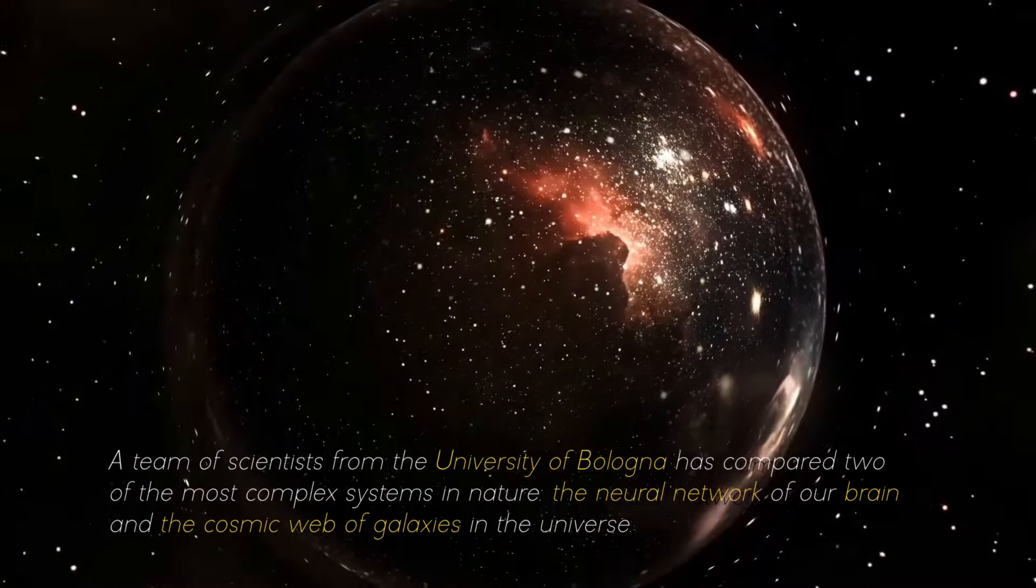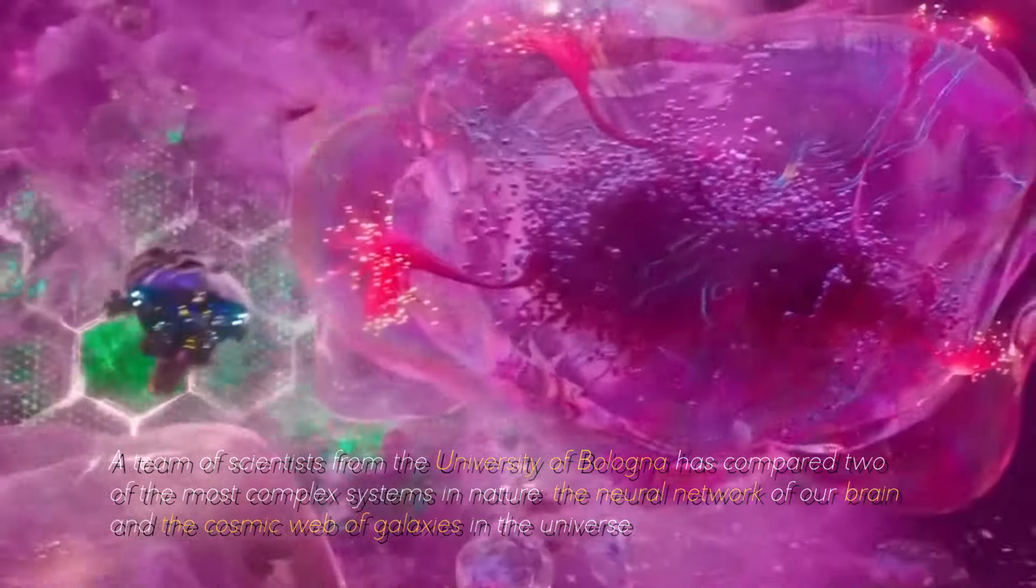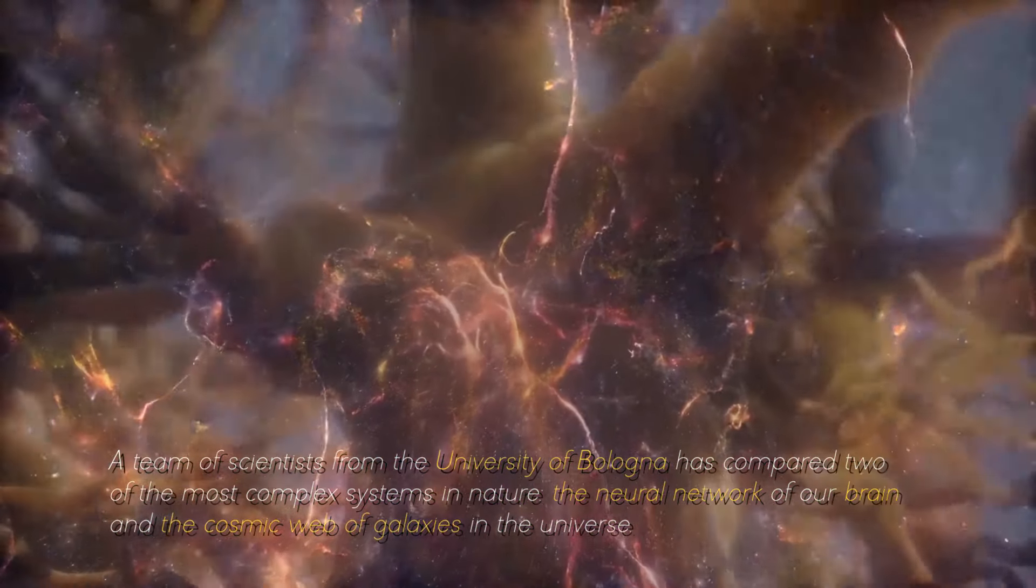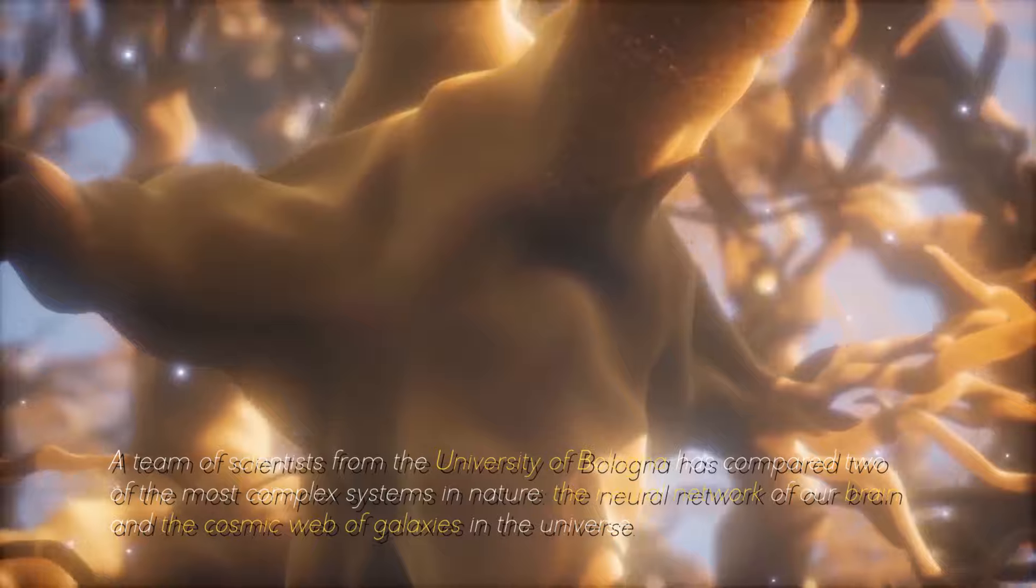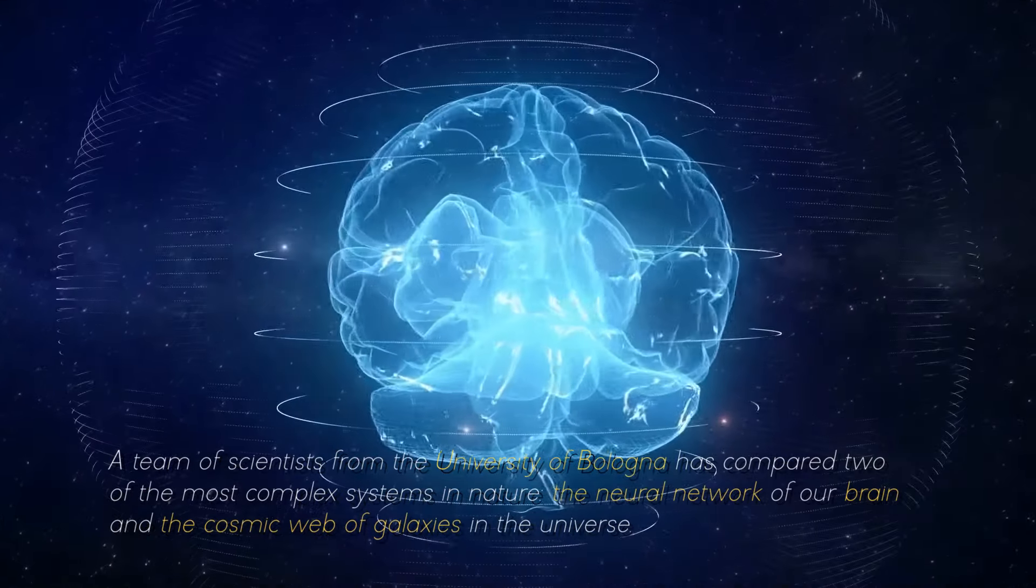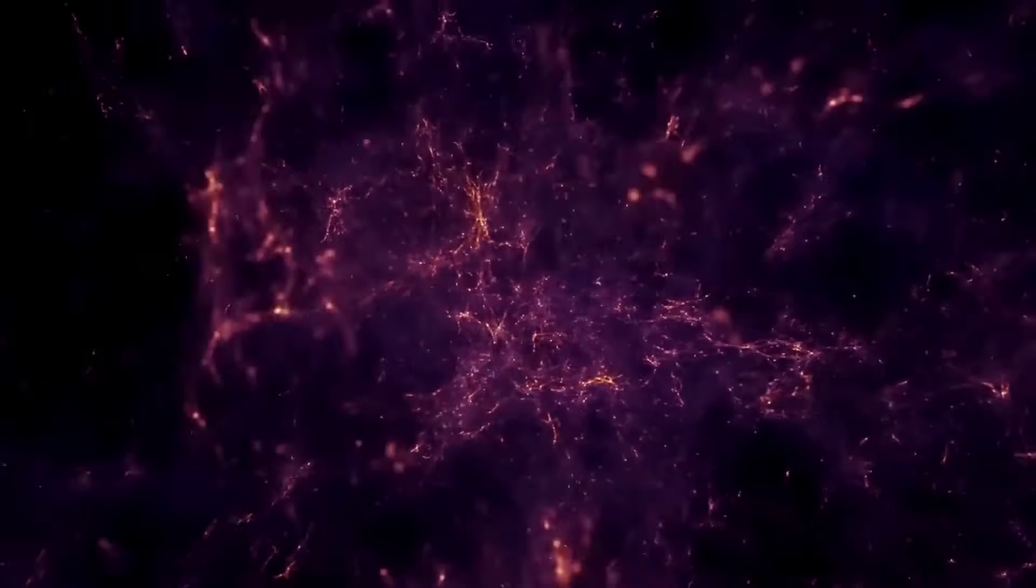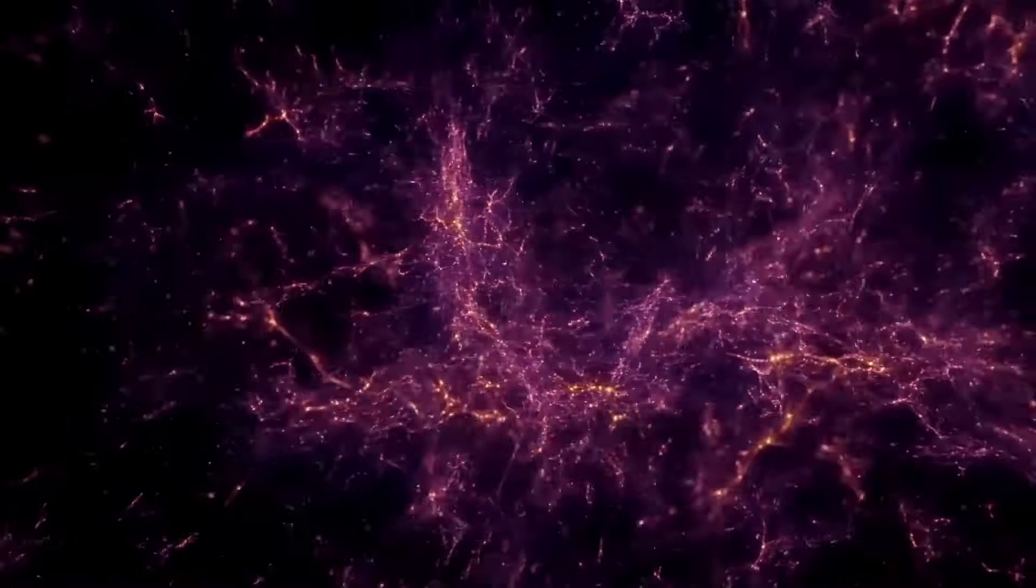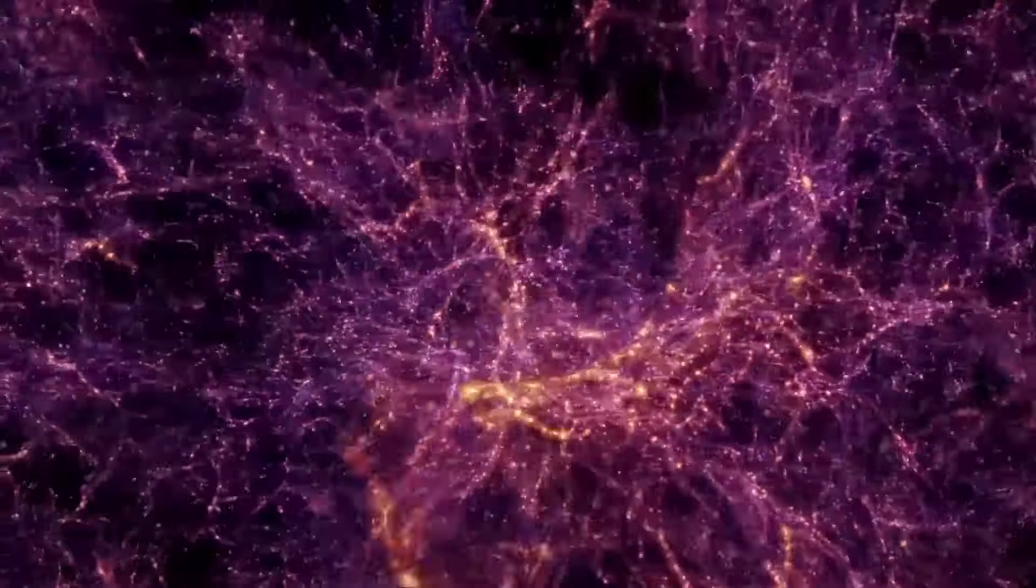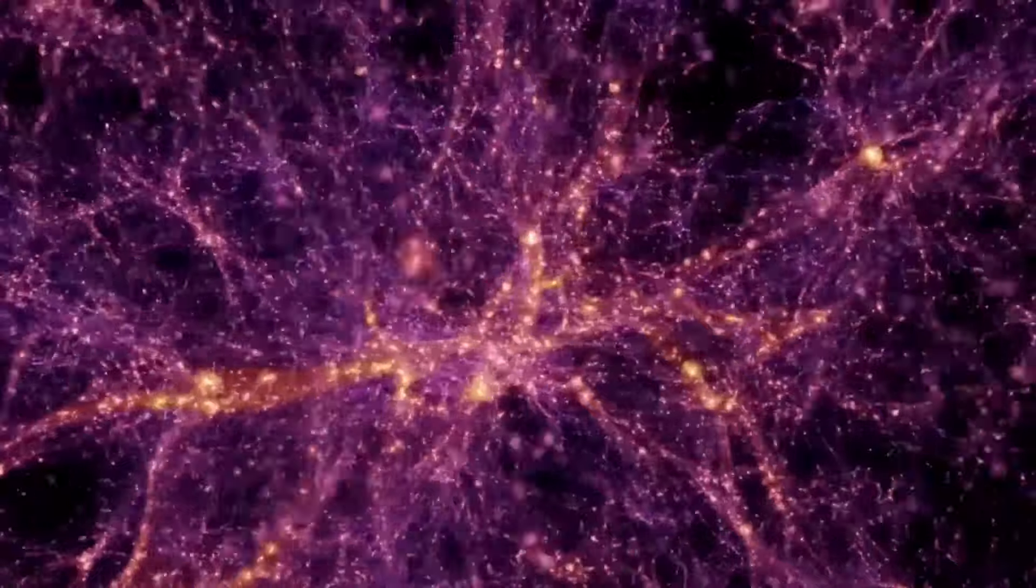A team of scientists from the University of Bologna has compared two of the most complex systems in nature, the neural network of our brain and the cosmic web of galaxies in the universe. What did they discover? That they are incredibly similar. And not just as they look if we compare a human neuron with a cluster of galaxies. There's more.